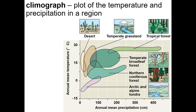Looking at this graph, we're comparing rainfall — or precipitation, which could be snow — to temperature. In the desert region, there is very little precipitation and relatively high temperature. Arctic areas can sometimes be considered deserts if rainfall is very low, but this graph focuses on warmer areas.